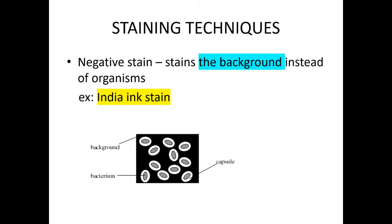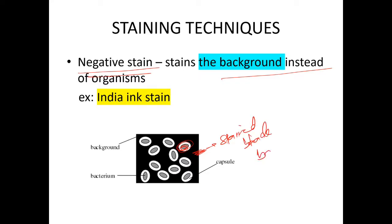Let's learn about staining techniques. First, we learn about negative staining. In negative staining, the background is stained instead of the organism. The organisms are not stained, but the background is stained black. This is negative staining, and it is performed using India ink.